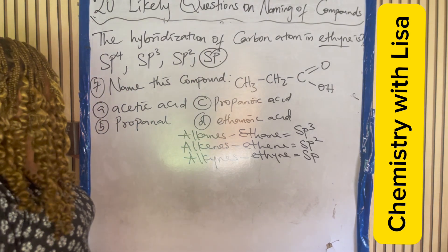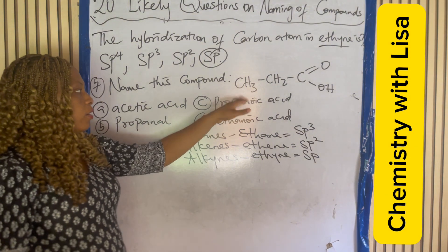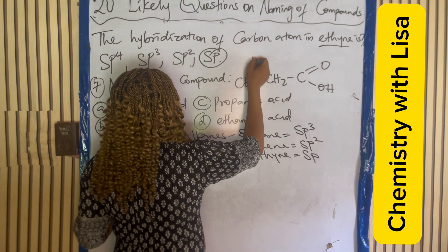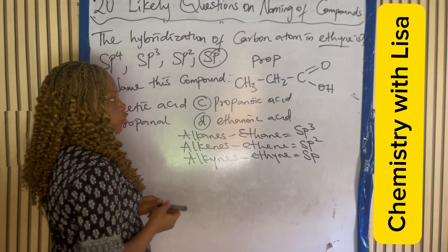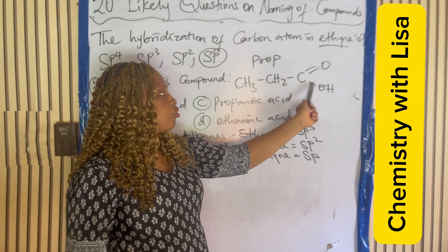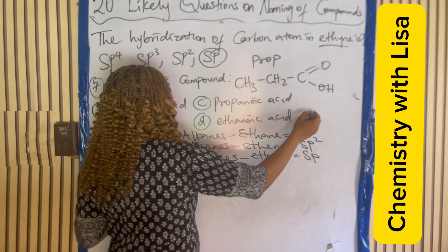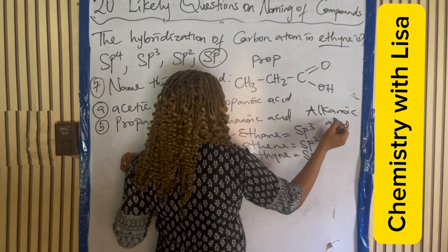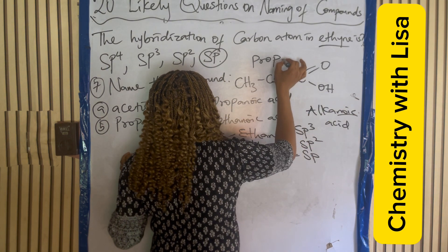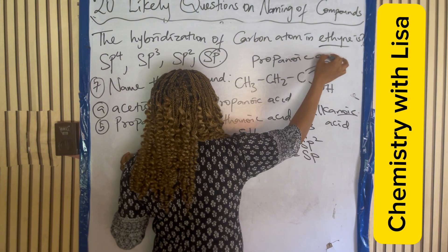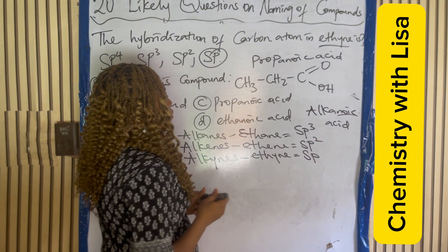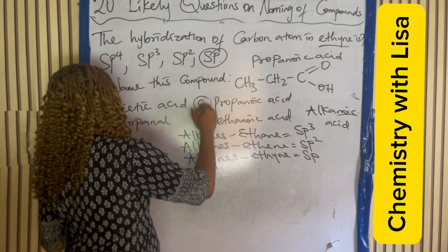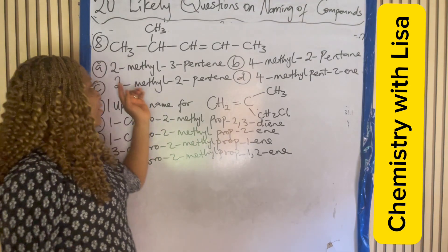Question seven: name this compound. Counting one, two, three — three carbons gives us 'prop.' The functional group is the alkanoic acid family, so we add 'anoic acid.' The name of this compound is propanoic acid, which is answer C.